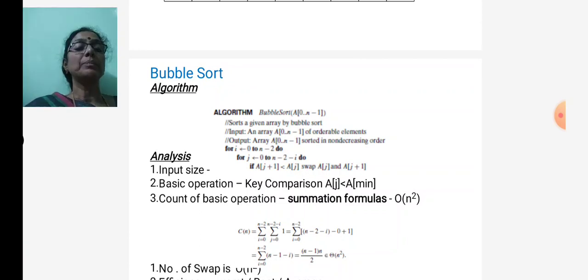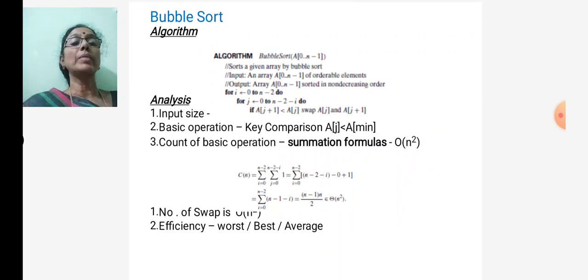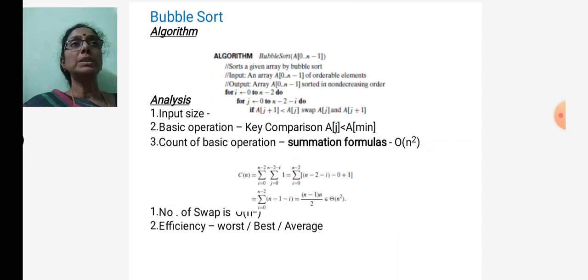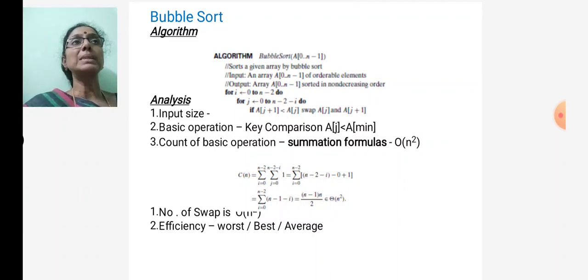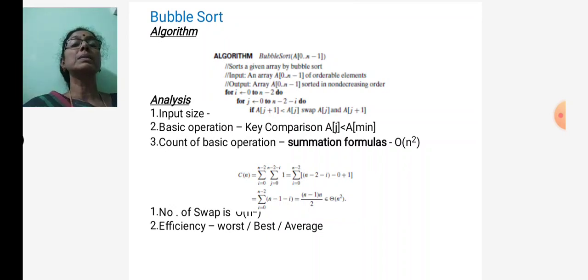Using two for loops, the time efficiency is O(n²) and the number of swaps is also O(n²). In summary, bubble sort is a brute force technique where adjacent elements are compared and after every pass the largest element bubbles up to the last portion of the given array.